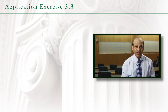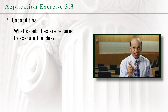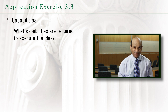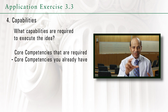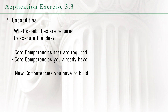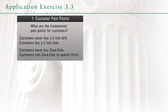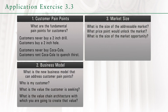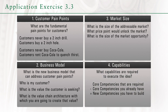The fourth question is capabilities: what are the core competencies that will be required to unlock this opportunity? The core competencies required minus the core competencies you already have will determine the new competencies you have to build. So for each one of the three ideas, prepare a document stating the customer problem, the business model you will construct to solve it, the potential market size, and the capabilities required to crack open this opportunity.